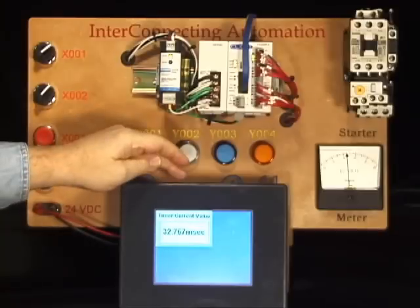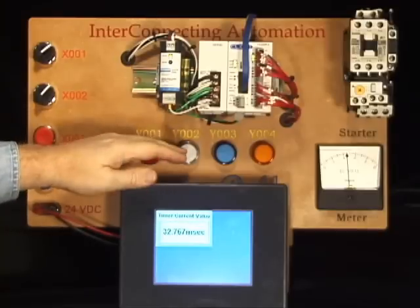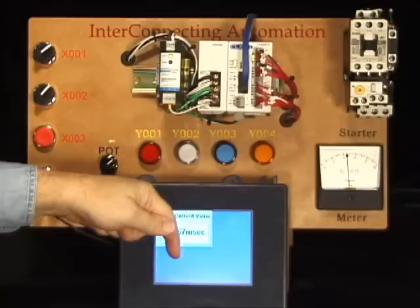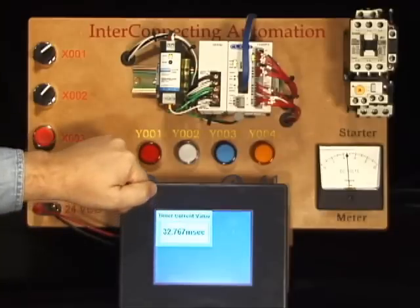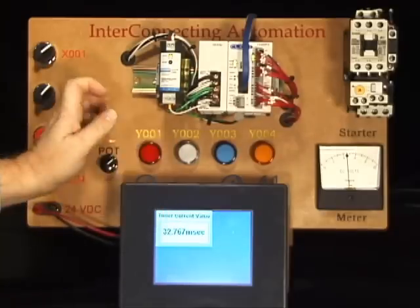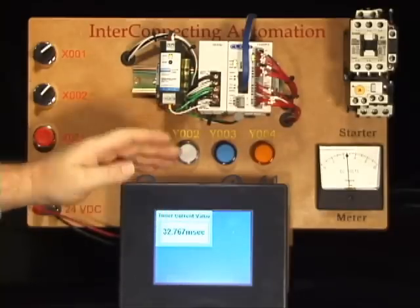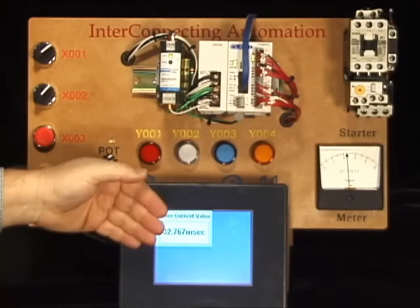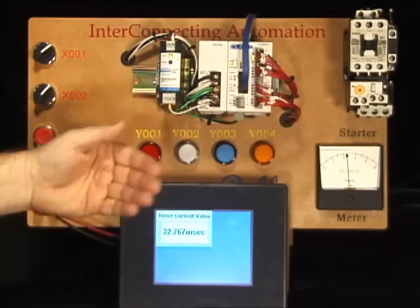Then out the bottom here we have a USB cable that's plugged into the laptop where we have the software running. When we go to download the screens, it downloads through the USB port. Once it's downloaded, the Seymour panel goes to run mode and starts communicating with the PLC through the serial cable on the back.